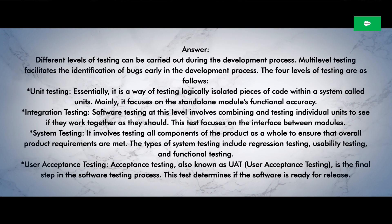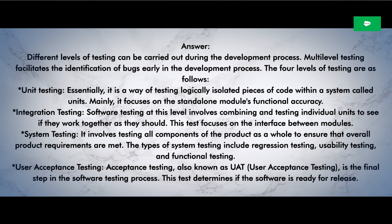Question 7: Can you tell me what the different levels of manual testing are? Answer: Different levels of testing can be carried out during the development process. Multi-level testing facilitates the identification of bugs early in the development process. The four levels of testing are as follows. Unit testing: it is a way of testing logically isolated pieces of code within a system called units, focusing on the standalone module's functional accuracy. Integration testing: this involves combining and testing individual units to see if they work together as they should, focusing on the interface between modules.